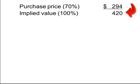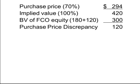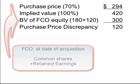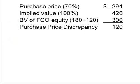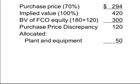The calculation of the purchase price discrepancy begins with the purchase price for 70% of the shares acquired. The purchase price is then grossed up to determine the implied value of all the equity — that is 100% of the shares of EFCO — in this case, $420,000. The purchase price discrepancy represents the difference between the implied equity value and the net asset value as reported on the books of EFCO, in this case $300,000, made up of common shares of $180,000 and retained earnings of $120,000. The resulting purchase price discrepancy is $120,000. It is first allocated to assets with fair values different than book values — in this case $50,000 for plant and equipment — and the positive residual of $70,000 represents goodwill. These are often referred to as fair value increments.